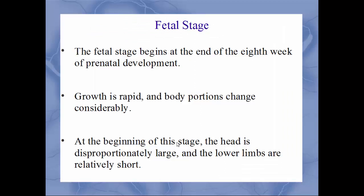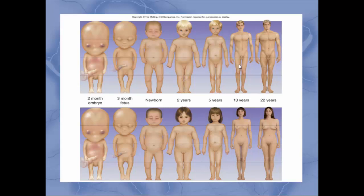After the embryonic stage, we move on to the fetal stage. The fetus is from the end of the eighth week to birth — the embryo was only the first two months. This is where you'll get very rapid growth and the body proportions change considerably. At this age, the head is really, really large compared to the rest of the fetus's body. Looking at images — top row males, bottom row females — a two-month embryo has a head much, much larger compared to the rest of its body, same with the fetus, still disproportionately larger. It's not until adolescence that it evens out completely.